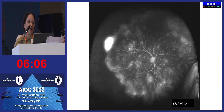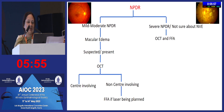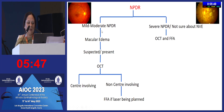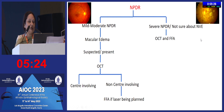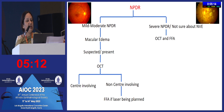Fluorescein angiography helps identify new vessels when you are in doubt. Differentiating IRMA from NVE is not always easy clinically, and fluorescein answers those questions. A simple algorithm for mild to moderate NPDR: check for macular edema clinically and with OCT. If OCT shows center involvement, proceed to injections. If non-center involving, plan focal laser but always do fluorescein first. For severe NPDR where you are unsure if NVE is present, always do a fluorescein angiogram.